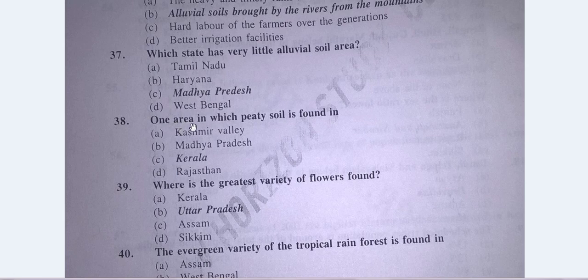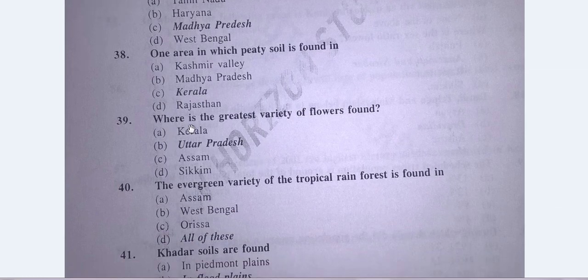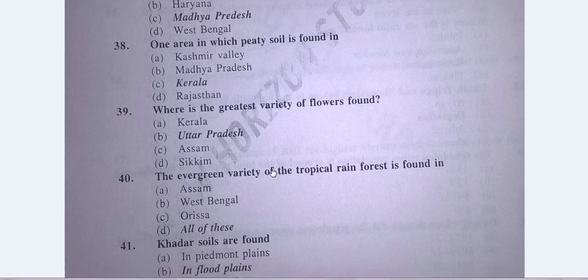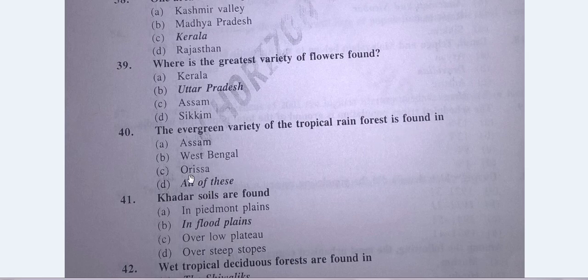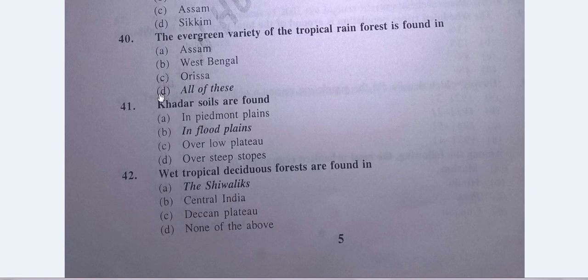Question No. 38: One area in which peaty soil is found — the answer is Kerala. Where is the greatest variety of forests found? The answer is Uttar Pradesh. The evergreen variety of tropical rainforest is found in — answer is D, all of these: Assam, West Bengal, Odisha. Khadar soils are found in flood plains — answer is B, in flood plains.